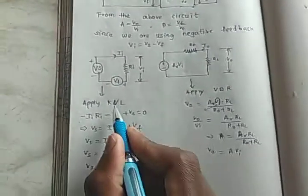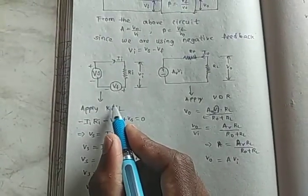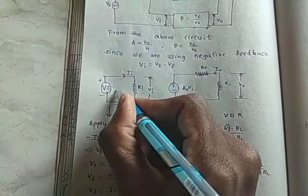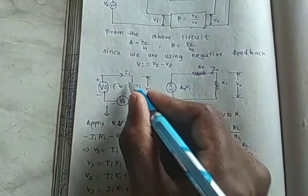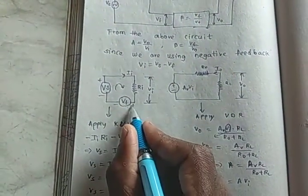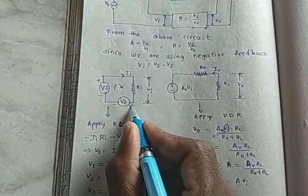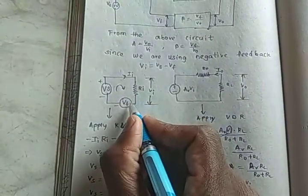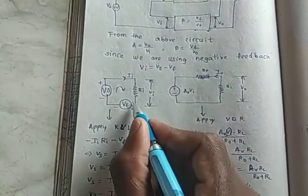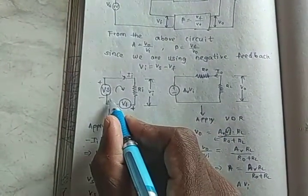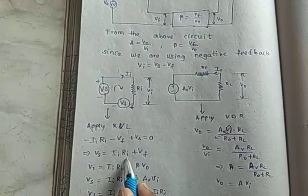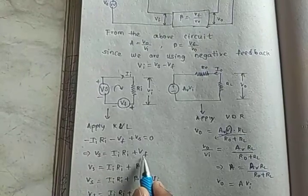First apply KVL to the input circuit, considering loop direction like this. Minus IIRI, since the voltage is in plus direction. If it crosses through a plus direction loop it will be minus, and if it's crossing minus it will be plus. Vs is equal to IIRI plus Vf.